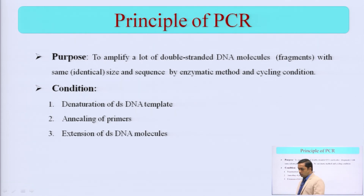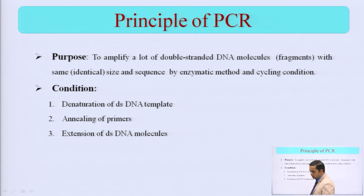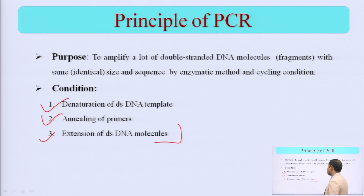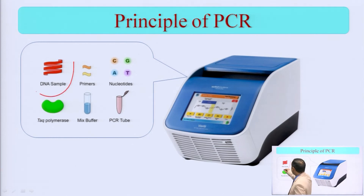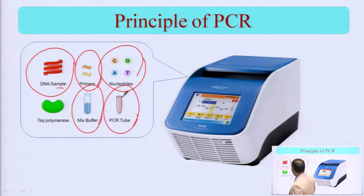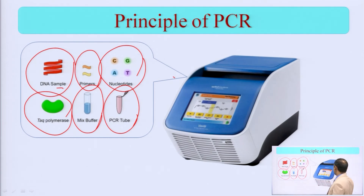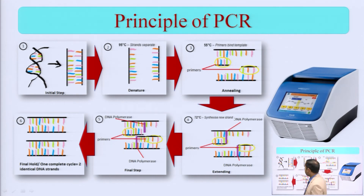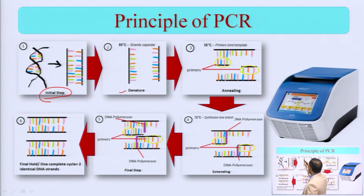Now, what is the principle? The principle is very simple: to amplify a large amount of double-stranded DNA fragments with multiple copies using an enzymatic method. We are actually doing three things: denaturation, annealing, and extension of the double-stranded DNA molecule. What are the things required? You require the DNA sample, some primers, nucleotides, a PCR tube, mixed buffer, and Taq polymerase. In the initial step, denaturation happens — we give a temperature of 95 degrees Celsius so the DNA gets separated.